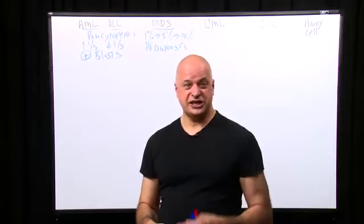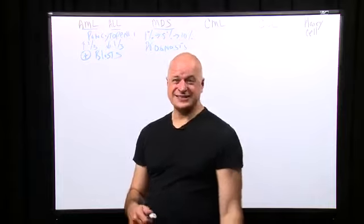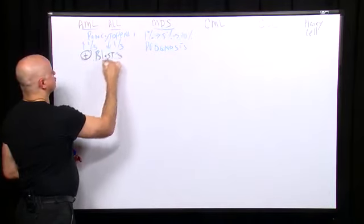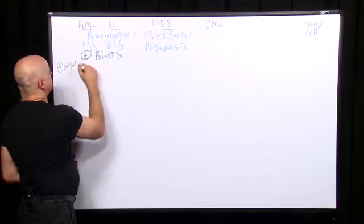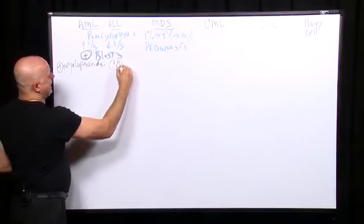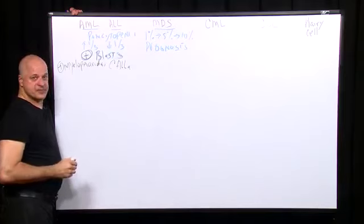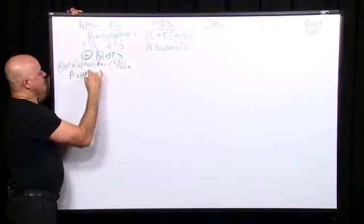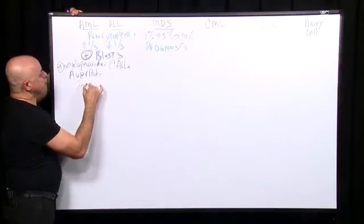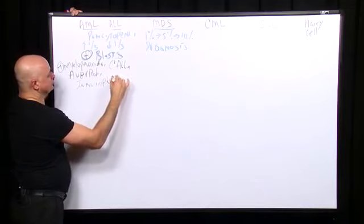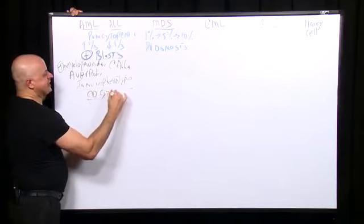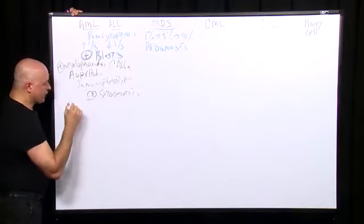The subtypes include undifferentiated, myelocytic with differentiation, promyelocytic, myelomonocytic, monocytic, and erythral leukemia — but it doesn't change the answer: there are blasts at the beginning. There are older tests like myeloperoxidase for myelocytic leukemia, or the common ALL antigen for acute lymphocytic leukemia. Auer rods are seen with acute myeloid leukemia. Our ability to distinguish which type it is relies on immunophenotyping — cell sorting using various CD receptors.